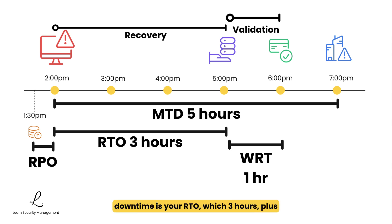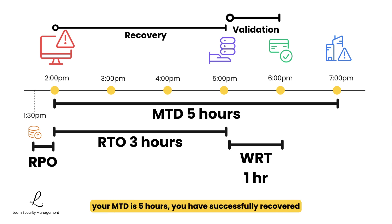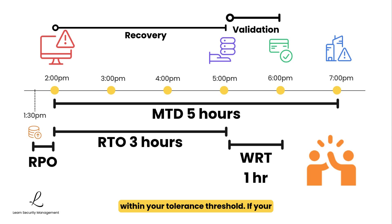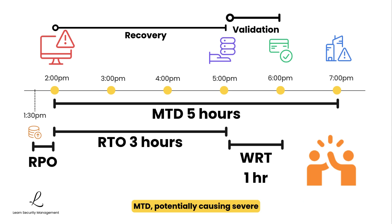So total downtime is your RTO — which is 3 hours — plus Work Recovery Time, which is 1 hour, making it a total of 4 hours. Since your MTD is 5 hours, you have successfully recovered within your tolerance threshold. If your recovery had taken 6 hours, you would have exceeded MTD, potentially causing severe business impact.